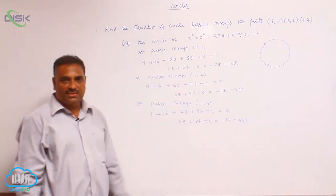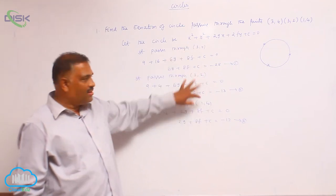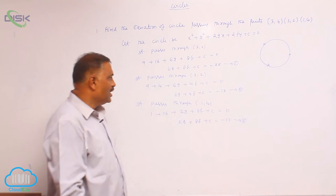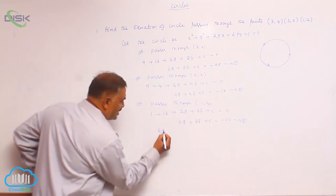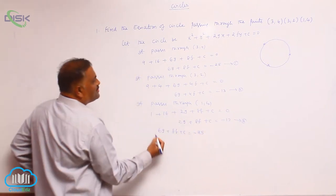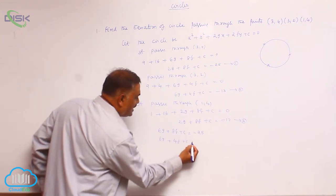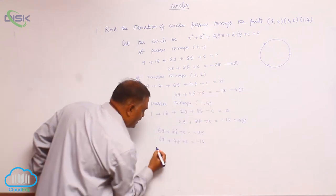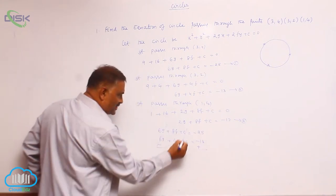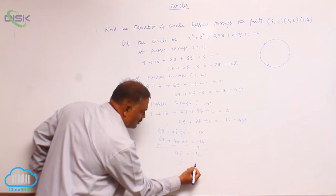Now we solve these three equations. First, take equations 1 and 2 — since c appears in both, we subtract. Equation 1: 6g + 8f + c = −25. Equation 2: 6g + 4f + c = −13. Subtracting — the g and c terms cancel — we get 4f = −12, so f = −3. That is our first value.